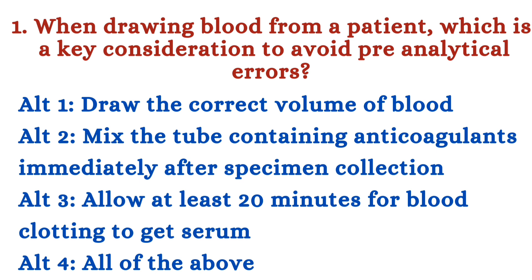Question number 1: When drawing blood from a patient, which is a key consideration to avoid pre-analytical errors? Option 1: Draw the correct volume of blood. Option 2: Mix the tube containing anticoagulants immediately after specimen collection. Option 3: Allow at least 20 minutes for blood clotting to get serum. Option 4: All of the above.